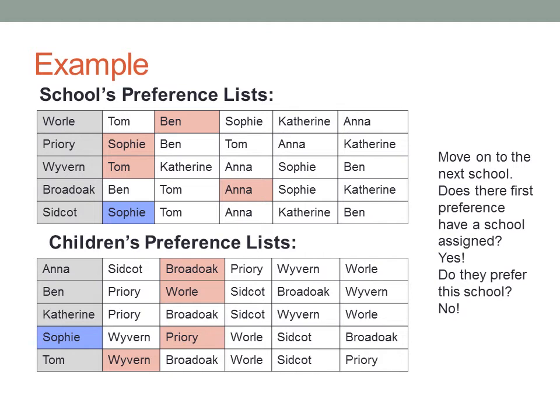Moving on to the next school, we find that Sidcott's first preference is Sophie. Sophie is already assigned to Priory, so we check if she prefers Sidcott. She doesn't, so we move on to their next preference.